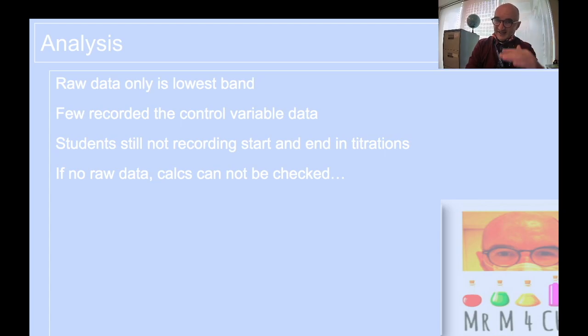Titrations, do the start and the end, not just the total. If you just put the total, we don't know how valid that data or accurate, what's the veracity, I like that word, the veracity of that data. So therefore, any subsequent calculations, we can't give much credit for because we don't know the actual data that's been used for it. So include the raw data, beautifully presented in a table, IV left-hand side, DV across the top, uncertainties, consistent decimal places. We all know this.